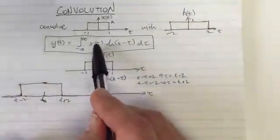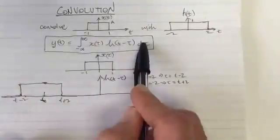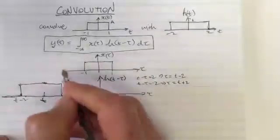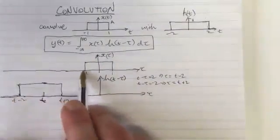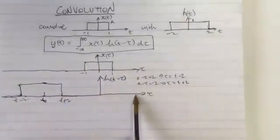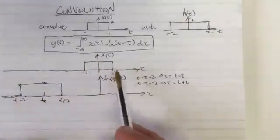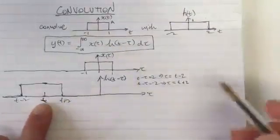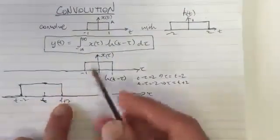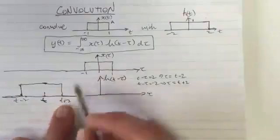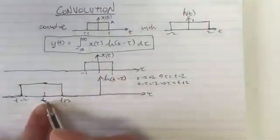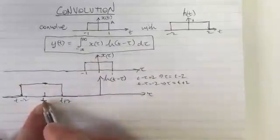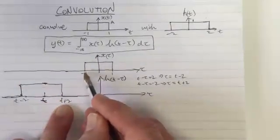Now what do we do for the convolution? We multiply these two functions together and add up the area underneath them. If we multiply them as drawn, part of the function gets multiplied by 0 because the top function is 0 there, and another part gets multiplied by 0 because the bottom function is 0. There's no overlap, so the answer is 0 for all values of t where t plus 2 is less than minus 1.